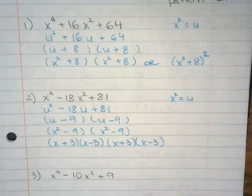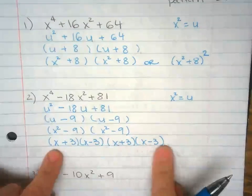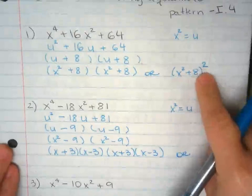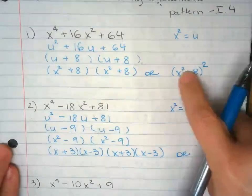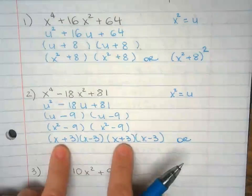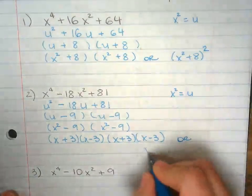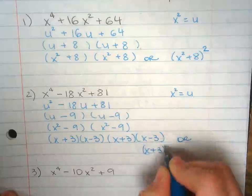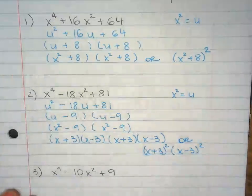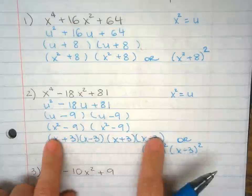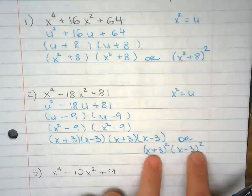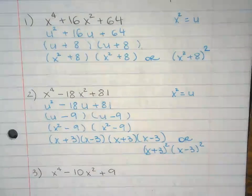You can leave it like this. Or, since I know that the square represents multiply by itself twice, notice I have x plus 3 twice. Or I can write x plus 3 squared, x minus 3 squared. This is your answer, or this is the answer. Either way, and they actually mean the same thing.